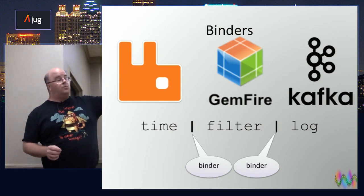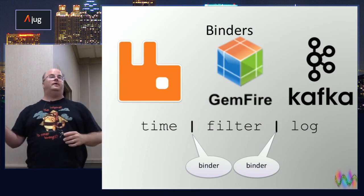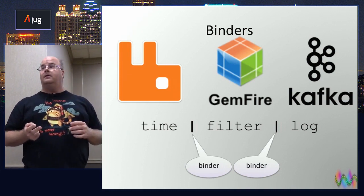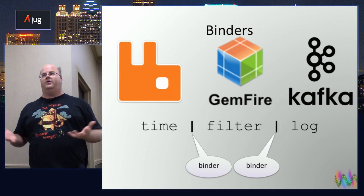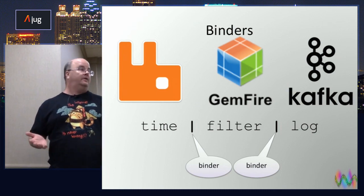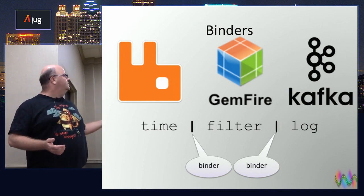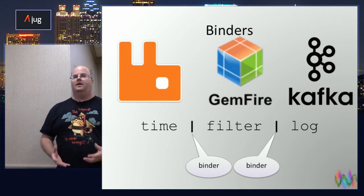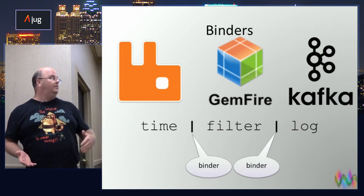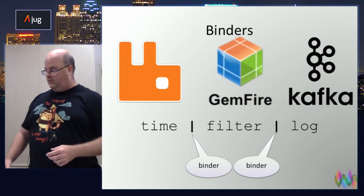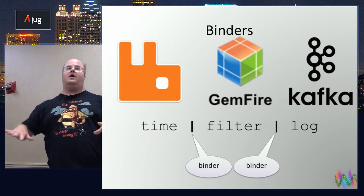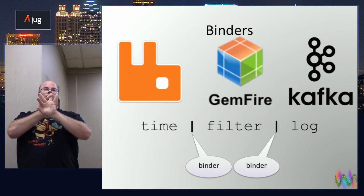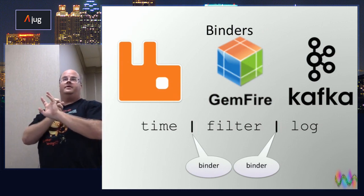The decision of which binder to use is based on your experience with each product and how much throughput you need. With Kafka you can do a million events per second, literally. With Rabbit it's not that high, but Rabbit is incredibly rich in the interfaces it offers. What do you need, what's your experience level, and what does your company feel comfortable with? There are three parts in this talk: Spring Cloud Stream, Spring Cloud Task, and then Data Flow — we're still on the components that build up Data Flow.